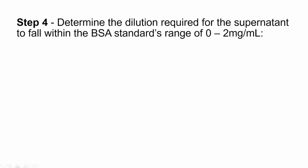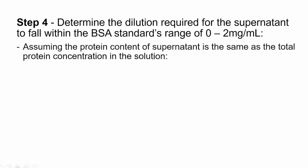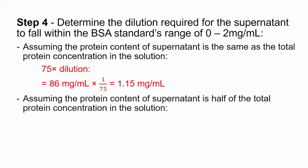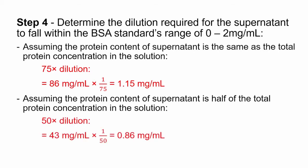In this example, a 75 times dilution was chosen for the situation where the supernatant has a protein concentration of 86 mg per milliliter. The 50 times dilution was chosen for the situation where the supernatant has a protein concentration of 43 mg per milliliter.